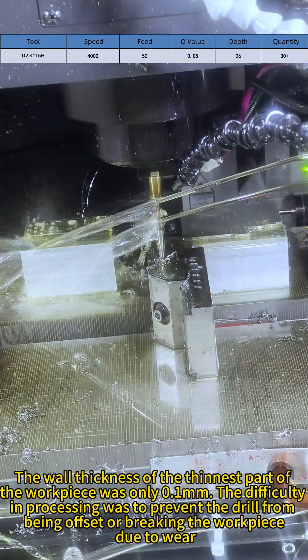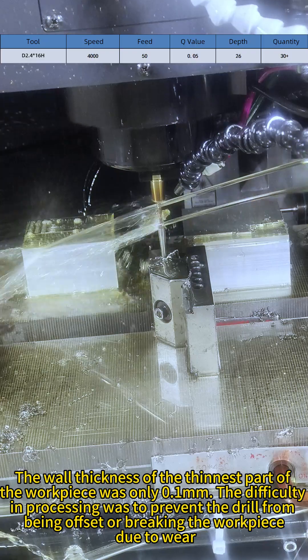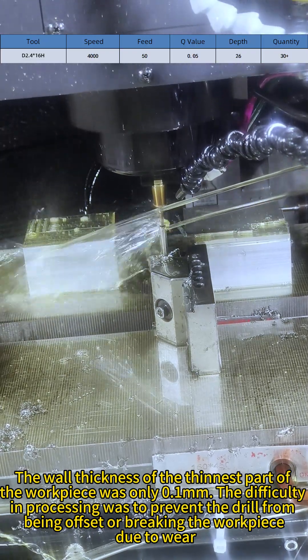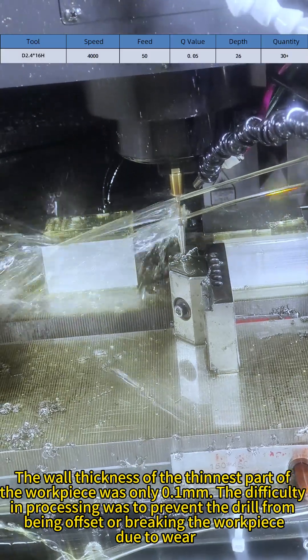The wall thickness of the thinnest part of the workpiece was only 0.1 millimeter. The difficulty in processing was to prevent the drill from being offset or breaking the workpiece due to wear.